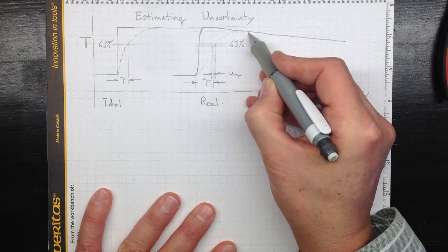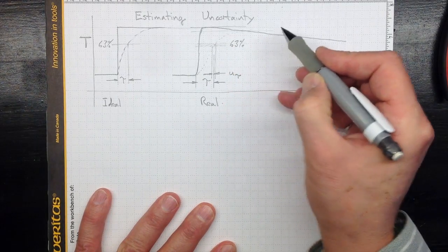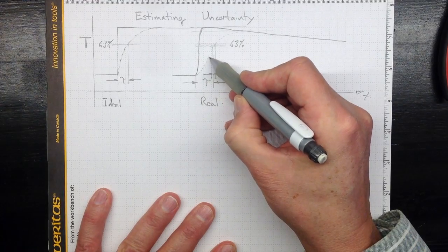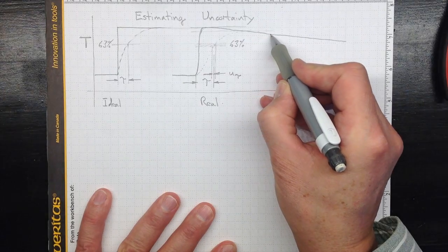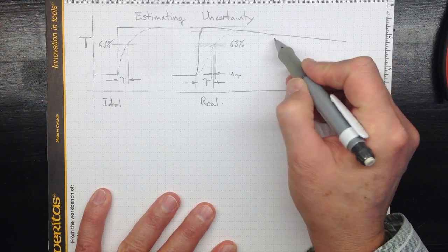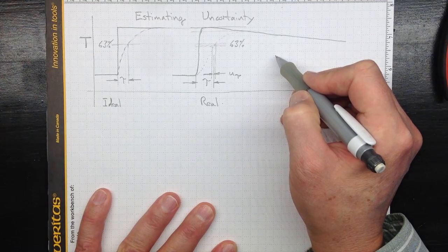Then started to decay back down towards room temperature while the sensor followed it up and eventually reached close to equilibrium with the actual temperature of the coffee cup.